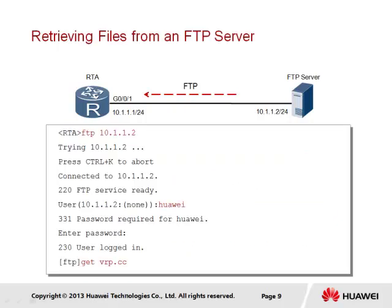If there is enough free storage space within the client, a connection to the FTP server can be established. For FTP connections, the command FTP followed by the IP address of the FTP server is used to initiate the connection, which will prompt for authentication of the client to ensure that the user has permission to access the FTP server. In this instance, the username and password is Huawei, and the user has been authenticated. We can see that the prompt shows the FTP service is now active and FTP-based commands can be used. The get vrp.cc command allows the client to retrieve a copy of the file named vrp.cc from the FTP server.